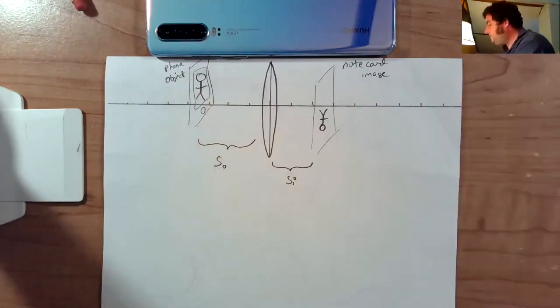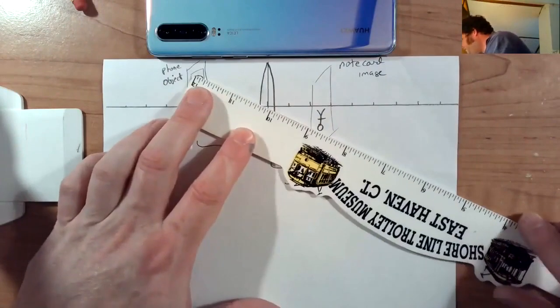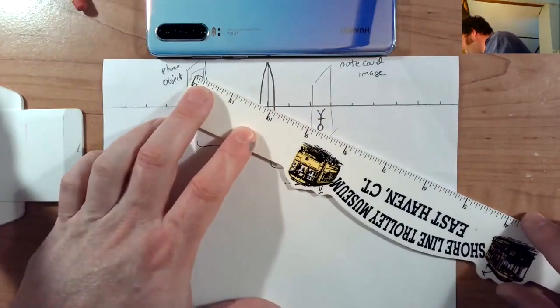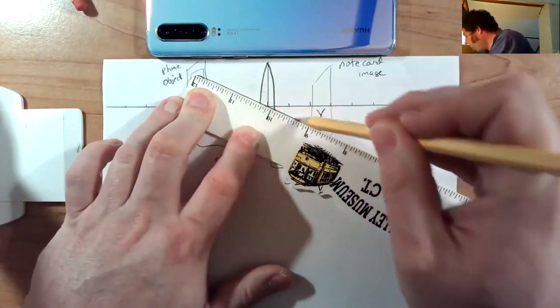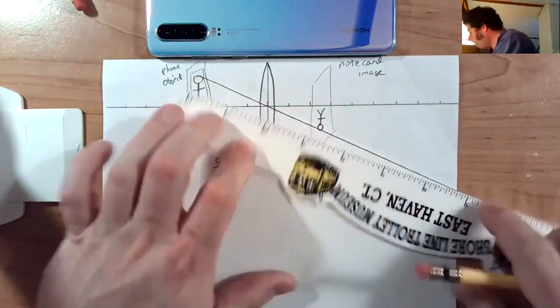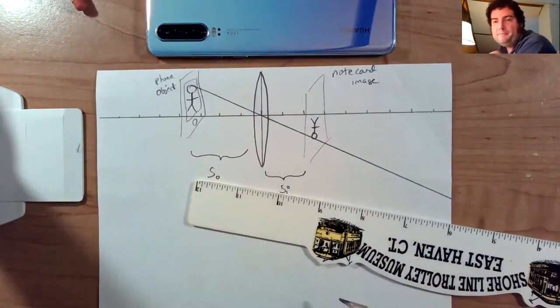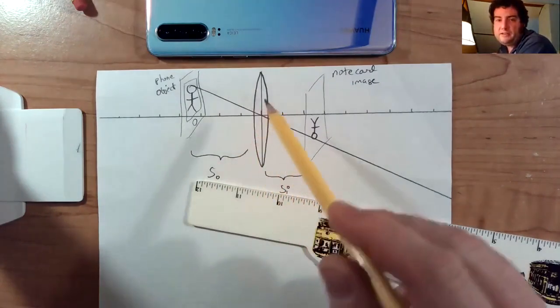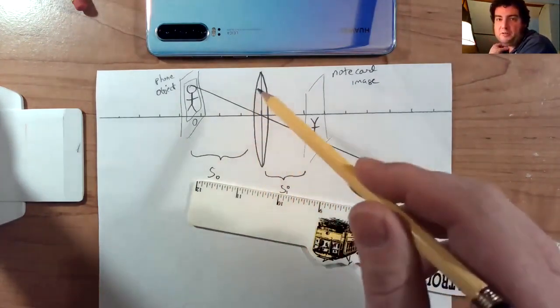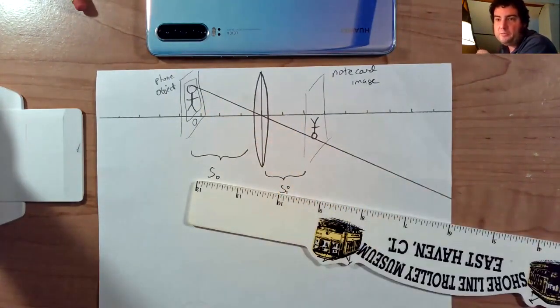And the easiest to understand is what's known as the central ray. So if I have a line leaving the head of this guy and passing right through the middle of the lens, the head of my image is going to be on that line. The reason this is not deflected, it's not easy to see in this sketch, but in a real lens, this light would be hitting the surfaces perpendicular. So it would not bend according to Snell's law.